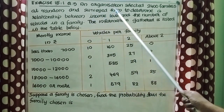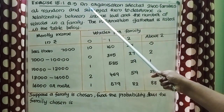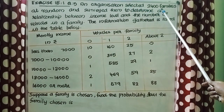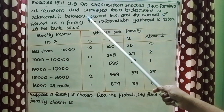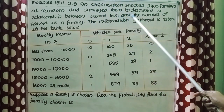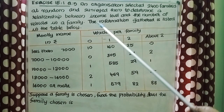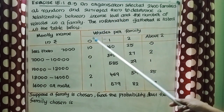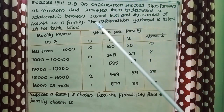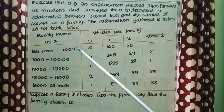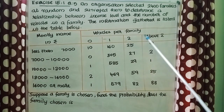An organization selected 2,400 families at random and surveyed them to determine a relationship between income level and number of vehicles in a family. The table lists monthly income against vehicles per family (0, 1, 2, above 2). For income less than 7,000: 10, 160, 25, 0 families respectively.